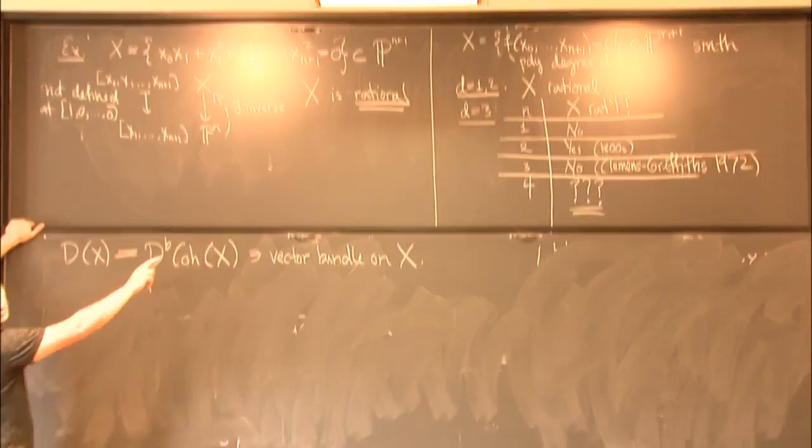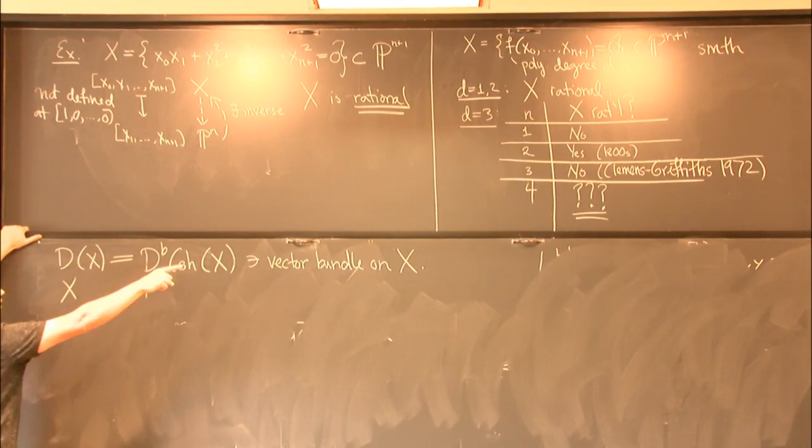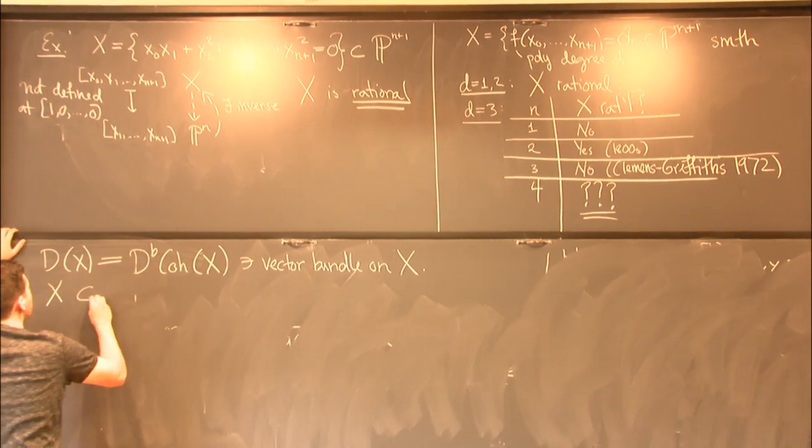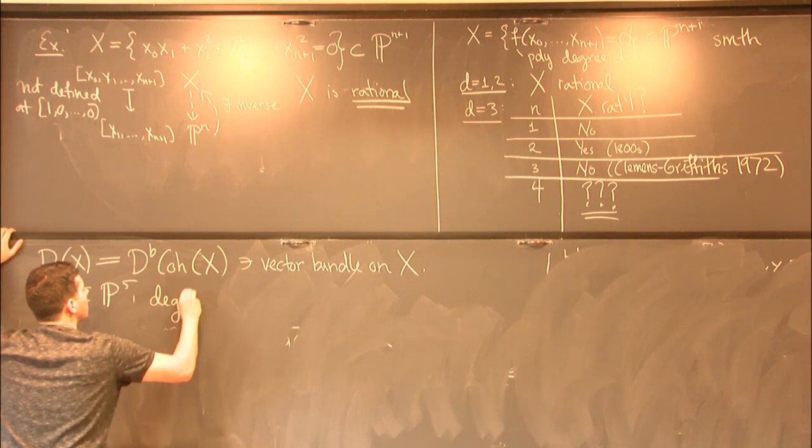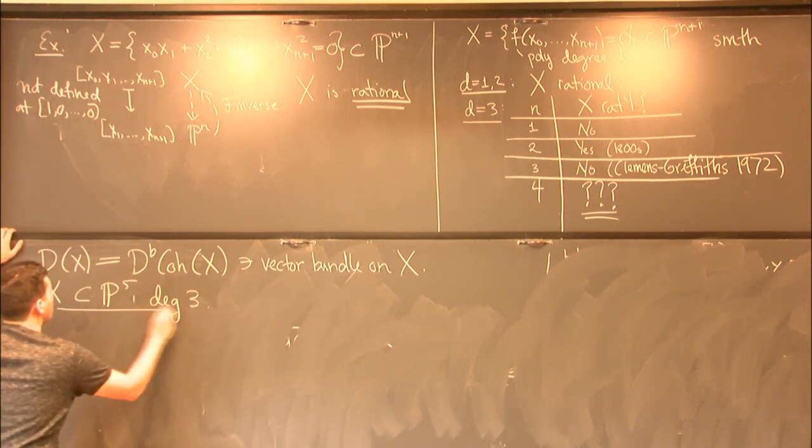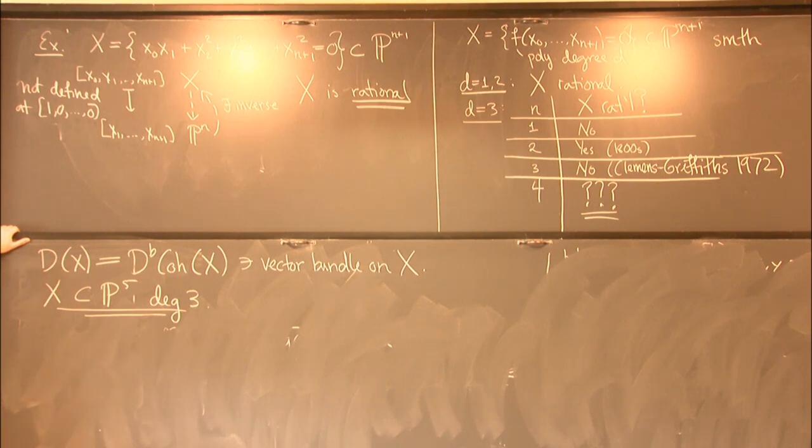And from now on in this talk I want to restrict to this question mark case. So x is going to be a degree 3 hypersurface in P5 from now on. So these things are sometimes called cubic fourfolds because they're cubics and they're fourfolds. And here's the theorem,